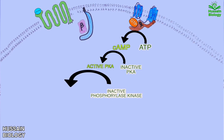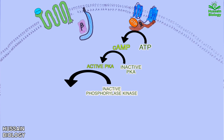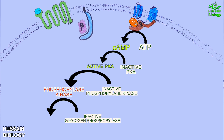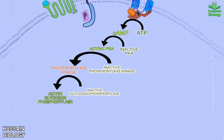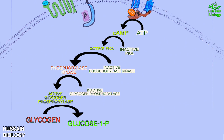First, the active form of PKA acts upon the inactive phosphorylase kinase to produce active phosphorylase kinase. This phosphorylase kinase then acts upon the inactive glycogen phosphorylase enzyme, making it active. Finally, this active glycogen phosphorylase acts upon glycogen and mediates its breakdown into glucose-1-phosphate, which is used in metabolism in different pathways downstream.